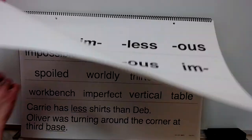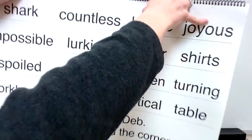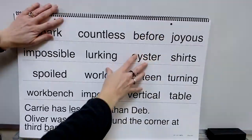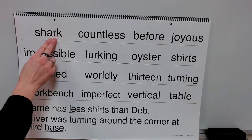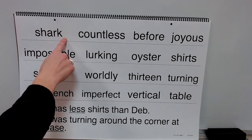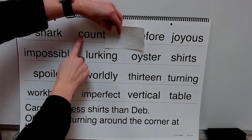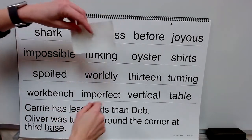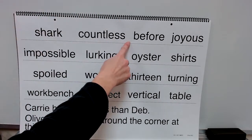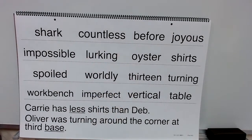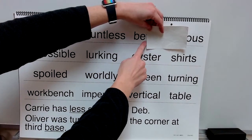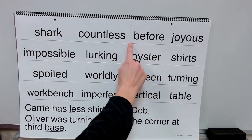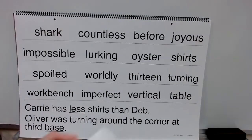Now you'll use your knowledge of sound spellings, affixes, base words, and endings to read these words. Sound: are. Meaning: shark. Base word: count. Suffix: less. Word: countless. Syllable: be. Syllable: for. Word: before.